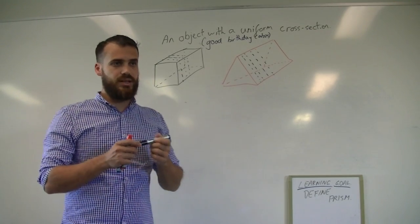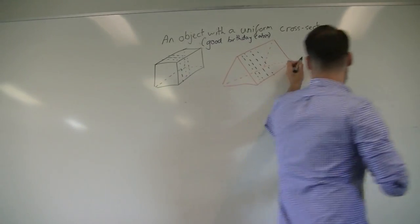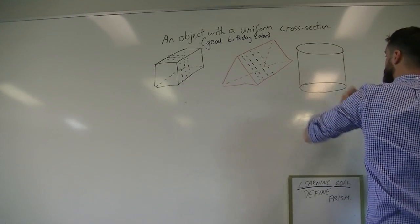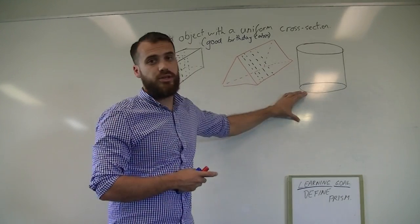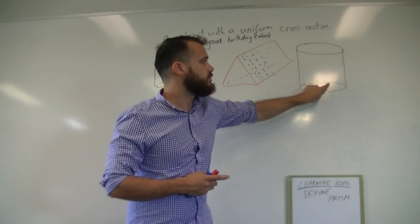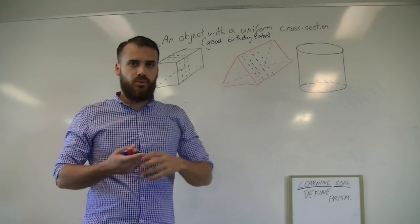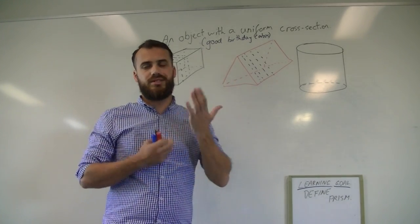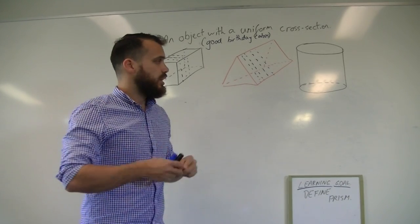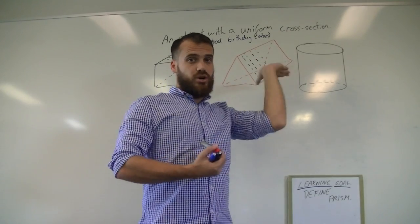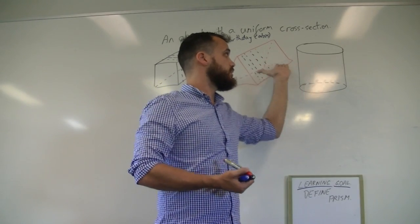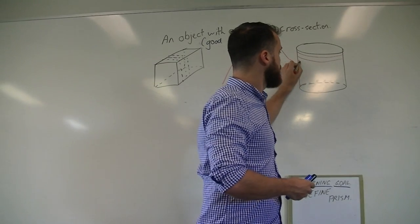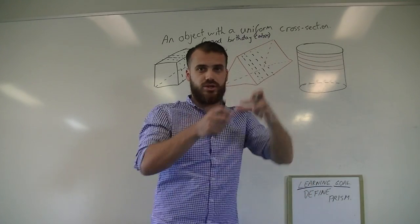Now, something that is a prism but doesn't always get called a prism looks like this — this is a circular prism. You would have also heard it referred to as a cylinder. Whether it's a prism or a cylinder, the rules still apply. The easiest way to cut this so that everyone gets the same sized slice is to turn your knife this way and cut. Everyone gets these disc-shaped slices of cake — nice little circles that sit on their plate.